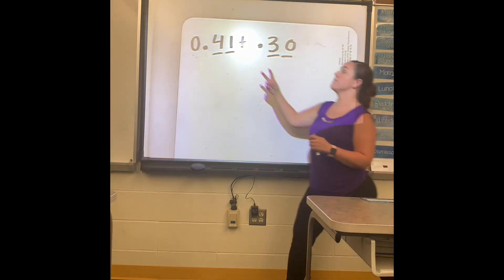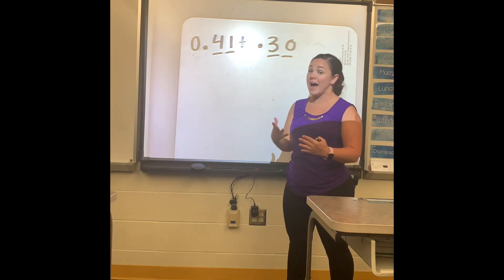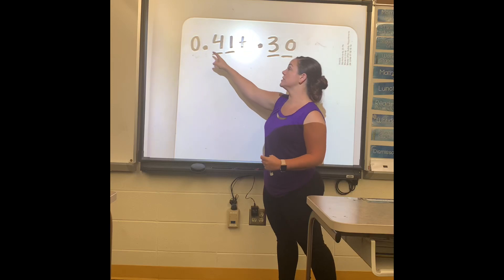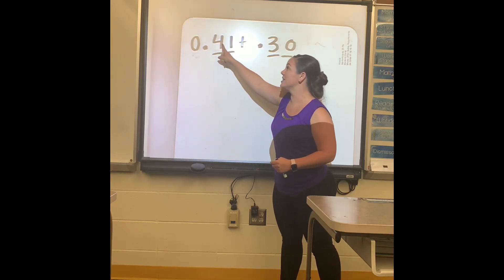So the first one that I will have us do—and I did give the students hundredth grid papers—is 0.41 plus 0.3. So I did tell the students it has to have two decimals after the zero or after the decimal. You have to have two places after the decimal. Why? Because that puts it in the hundredth spot.